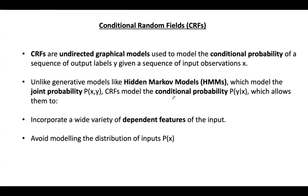In this lecture, let us discuss conditional random fields, which are a type of probabilistic model used for structured prediction, where the goal is to predict a sequence or structured output — like a sequence of labels — rather than a single label. These conditional random fields are mainly used to model the probability of a sequence of labels given a sequence of input data, and they are especially useful in tasks where context or neighboring data points matter.